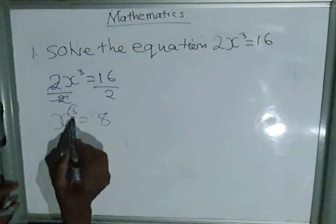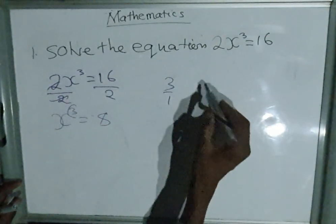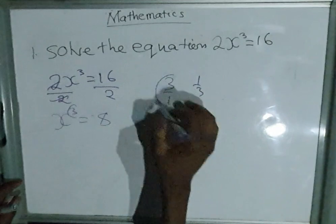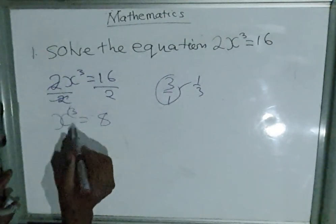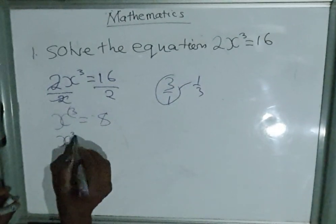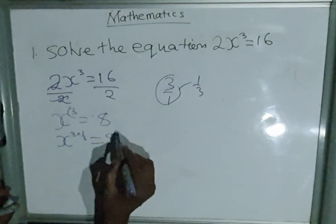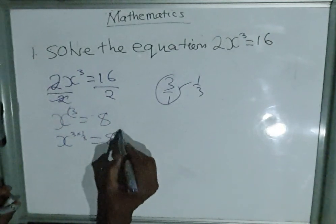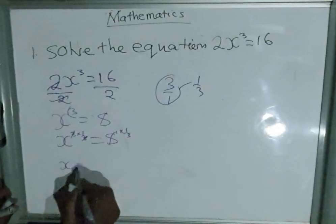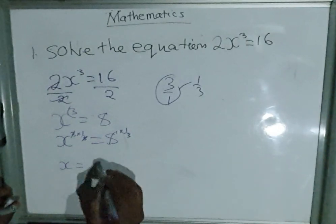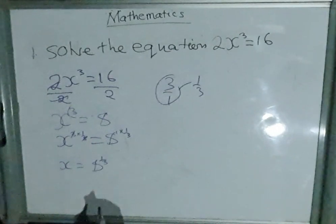The reciprocal of 3, any number, is always over 1. So the reciprocal here is 1/3. You multiply both sides by the reciprocal. So we have x^(3 × 1/3) = 8^(1/3). Any number is always powered by 1 times 1/3. So 3 and 3 will go, we have x equals 8^(1/3).